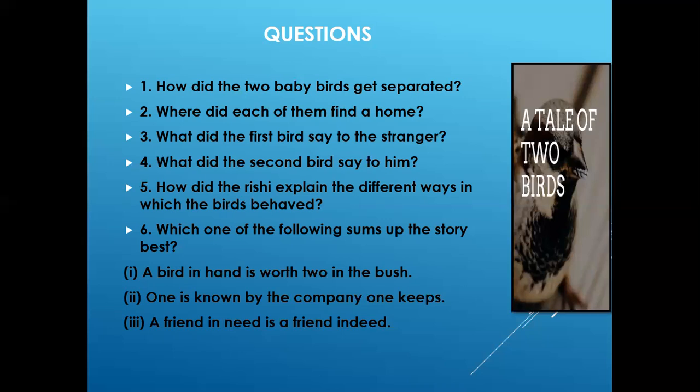What did the first bird say to the stranger? This answer you will find on the second page of the chapter, that is page number two. The first bird saw the stranger — that was the king. He called the robbers to come quickly and rob the king of his jewels and his horses. The bird indirectly warned the stranger of the consequences of sitting near the cave. This answer can sum up what the first bird says to the stranger.